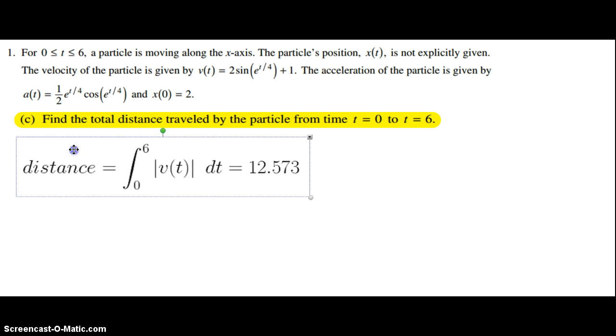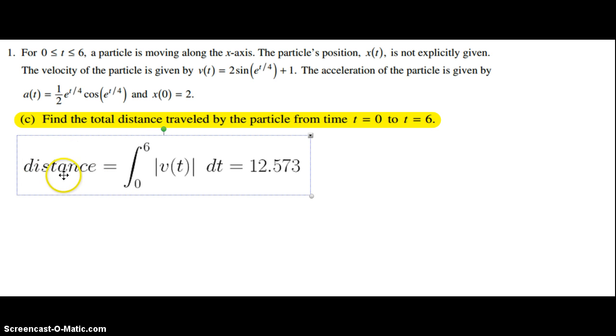The distance for any time interval is the integral from a to b of the absolute value of velocity with respect to time. We want to do this in the interval from 0 to 6. The trick is putting this into your calculator correctly. But when done correctly, we end up with the value of 12.573. That concludes Part C.